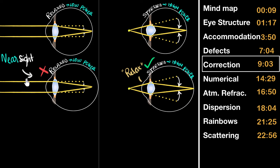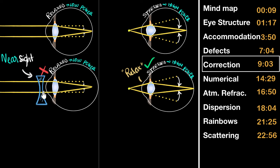When looking at far objects with an elongated eyeball, rays focus in front of the retina. To correct this, we need to reduce the bending power using an external lens. A convex lens would add more converging power, so instead we use a concave lens to reduce bending power. With a suitable focal length, we can refocus the image back onto the retina.